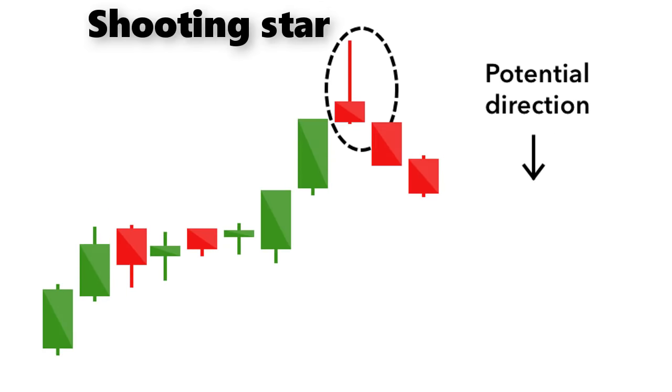Shooting Star. The Shooting Star is the same shape as the inverted hammer but is formed in an uptrend. It has a small lower body and a long upper wick. Usually, the market will gap slightly higher on opening and rally to an intraday high before closing at a price just above the open, like a star falling to the ground.